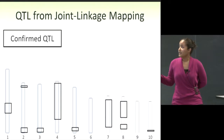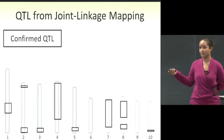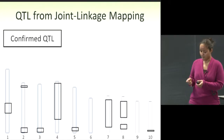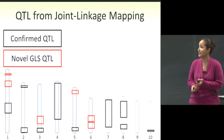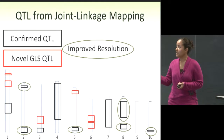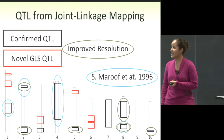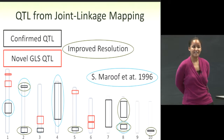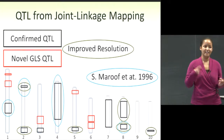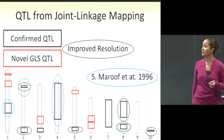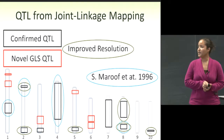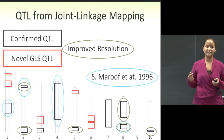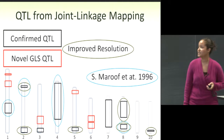Other studies confirmed 10 of the QTL I had identified using the NAM, and additionally six novel GLS QTL were identified. Six of the confirmed QTL had improved resolution using the NAM. The four QTL identified by Saghai Maroof in 1996 were also identified by me, using the same field site. This suggests that while the population likely shifts over time, there are at least the same pressures driving the plant to use similar disease resistance mechanisms.